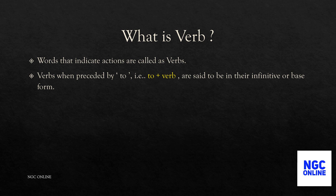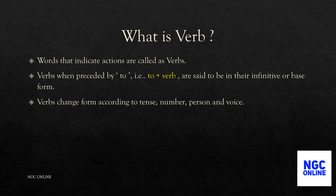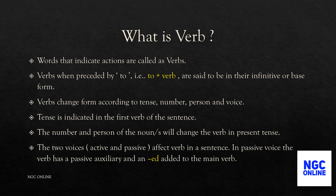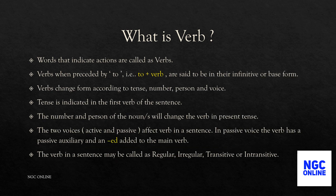Verbs change their form according to tense, number, person, and voice. Tense is indicated in the first verb of the sentence. The number and person of the noun will change the verb in the present tense. The two voices — active and passive — affect the verb in a sentence. In passive voice, the verb has a passive auxiliary and an 'ed' added to the main verb.